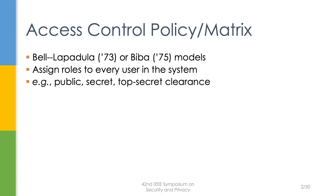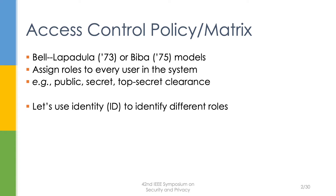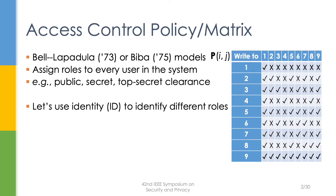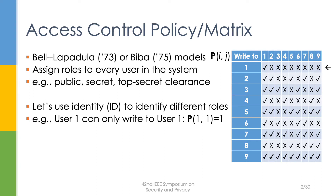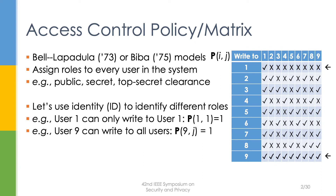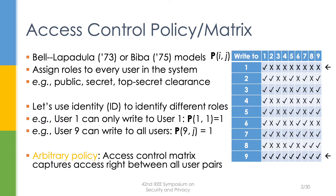Let's consider the classic access control model that assigns roles to every user in the system, such as probate or top clearance. In this work, we use an identifier or ID to represent each role, and we use a matrix P for the access control policy. For example, user 1 can only write to user 1, while user N can write to all users. In general, such a matrix P can capture the access weight between all user pairs, which is what we mean by arbitrary policy in this work.